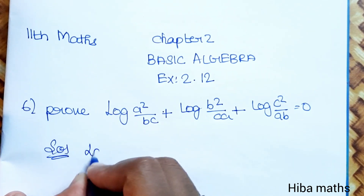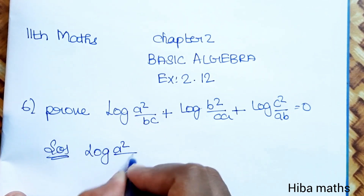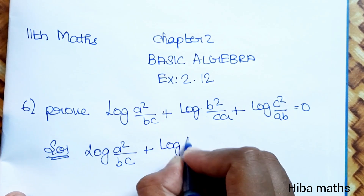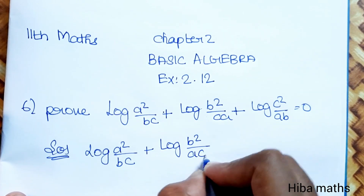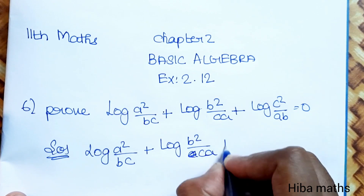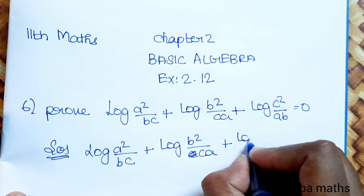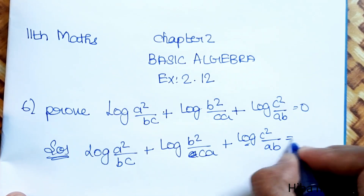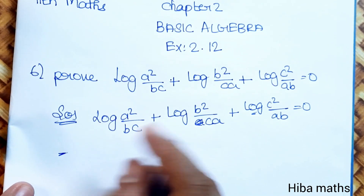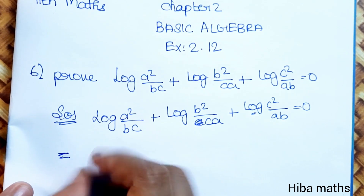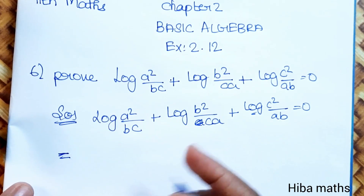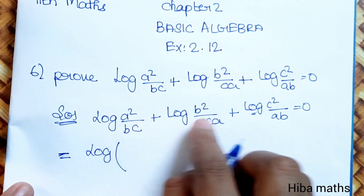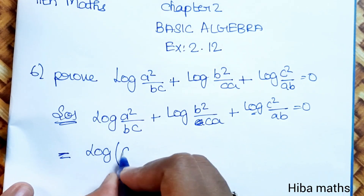Solution: given here, log(A² / BC) + log(B² / AC) + log(C² / AB) is equal to 0. I will prove it in the LHS part. Using the log addition property, I will convert it into multiplication.